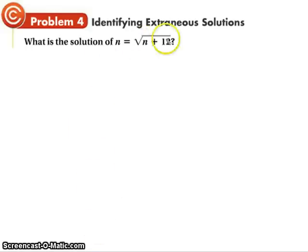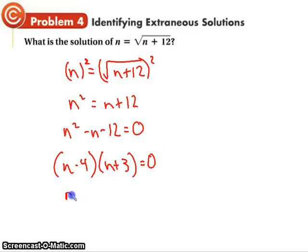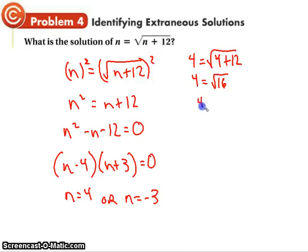Okay, square roots already by itself, so square both sides. So I get n squared is equal to n plus twelve. So n squared minus n minus twelve equals zero. The old factoring method. So I get n equals four or n equals negative three. Now I got to check. So I plug in a four. Four is equal to the square root of four plus twelve. Four is equal to the square root of sixteen. Four equals four, so that one's good.